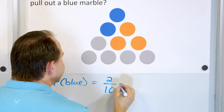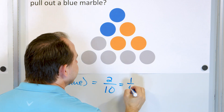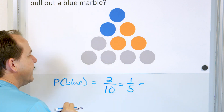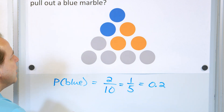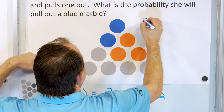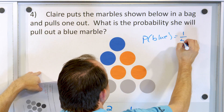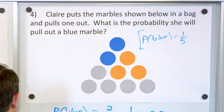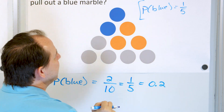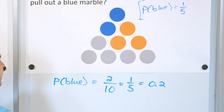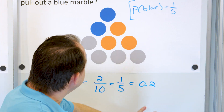Two out of 10, reduced by dividing by 2, gives you one fifth. One fifth as a decimal is 0.2. So the probability of getting a blue marble is one fifth, or 0.2, or 20%. These are all the same way of expressing the same thing.